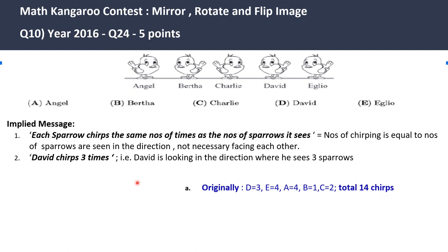Now the question is, find out which sparrow turned her position which increases the total number of chirping. When you have this question and the condition is that the total number of chirps has to go up, if we want to increase the number of chirps, what exactly will you look after?